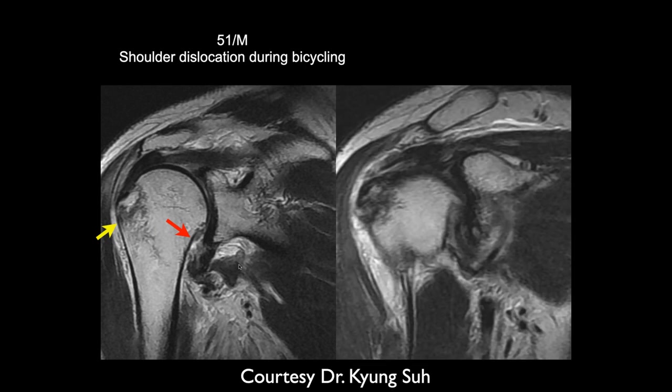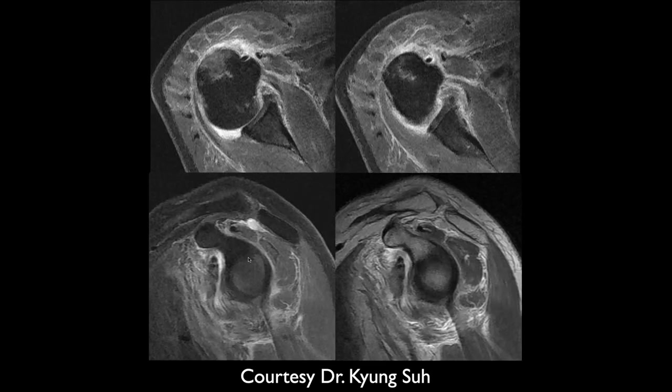Another cut looking at the supraspinatus shows it appears torn at the footprint as well. The other images show continuation of the HAGL that we were seeing.